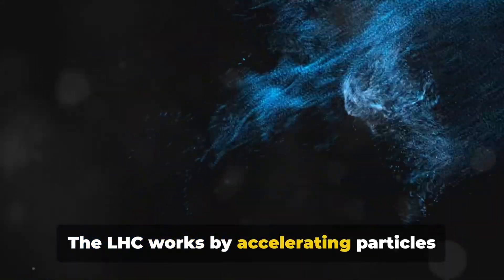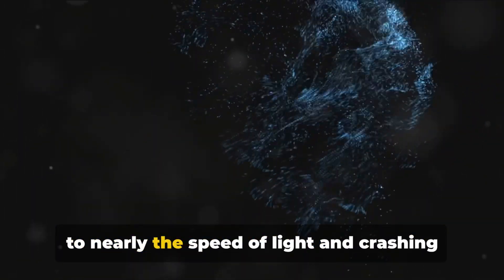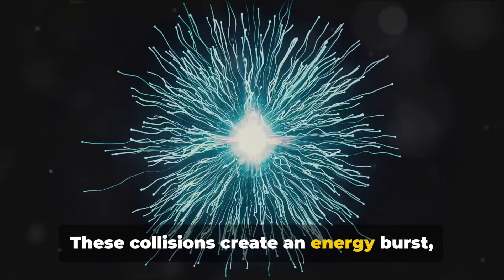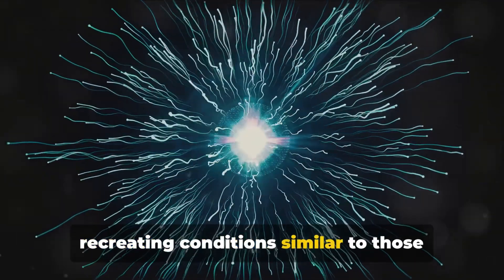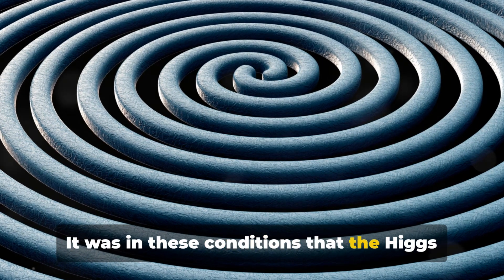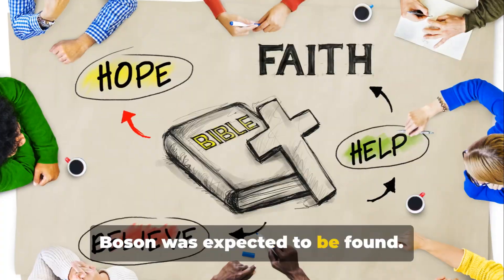The LHC works by accelerating particles to nearly the speed of light and crashing them together. These collisions create an energy burst, recreating conditions similar to those just after the Big Bang. It was in these conditions that the Higgs boson was expected to be found.